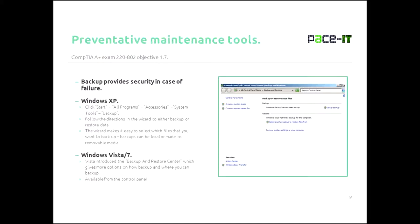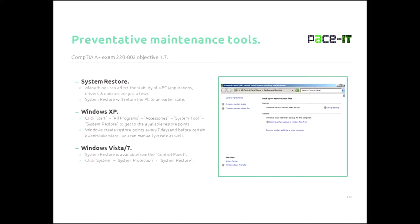In Windows Vista, they introduced the Backup and Restore Center, which gives you more options on how and where you can back up. It introduced the ability to back up to a network drive, which is honestly a godsend given the amount of data that PCs keep nowadays. The Backup and Restore Center is available from the Control Panel.